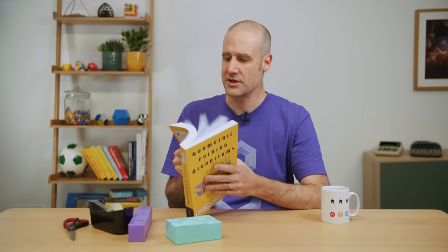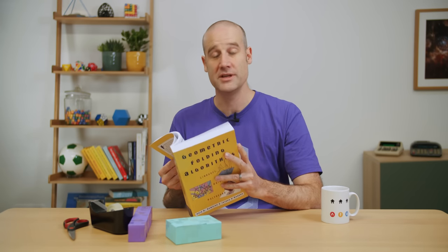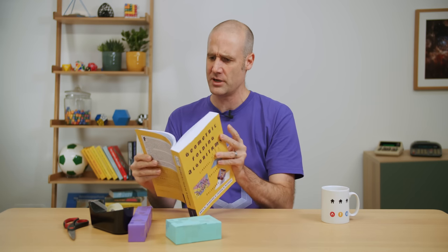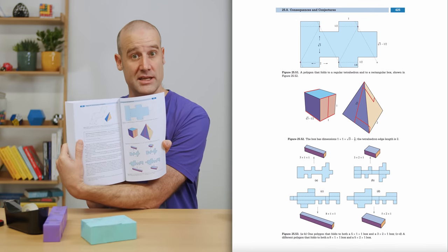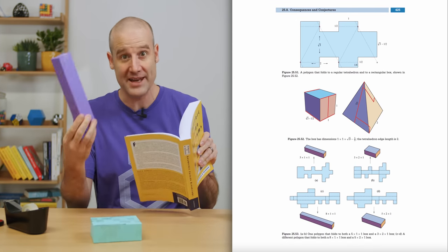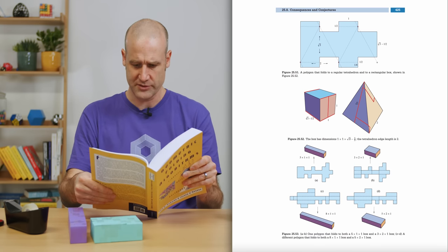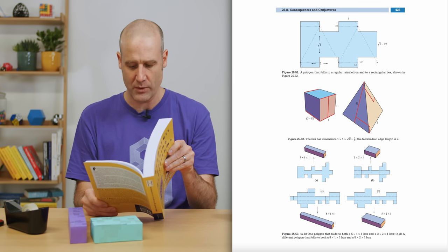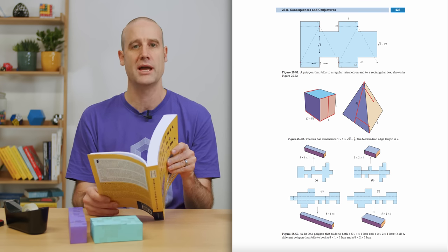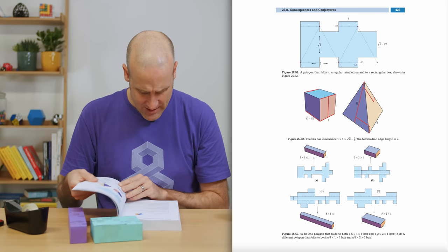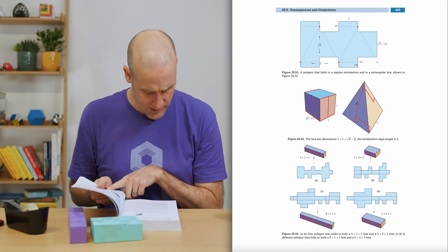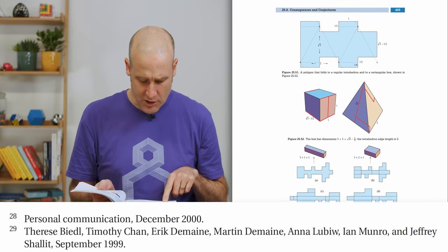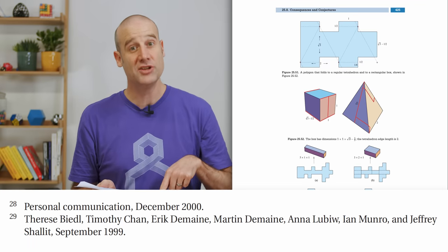This is Geometric Folding Algorithms by Demaine and O'Rourke. Eric Demaine has done a lot of amazing bits of mathematics, including writing this incredible book. On page 425, you can see the picture of that net and how it folds into the two different shapes. They also give a one-by-one-by-eight and a five-by-two-by-one. This book came out in 2007, and in the text they mention these were found by a group at the University of Waterloo from September 1999.